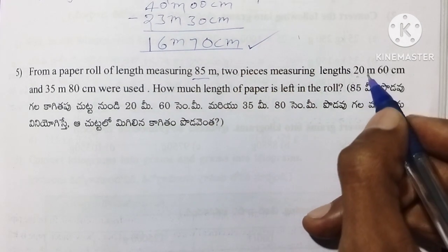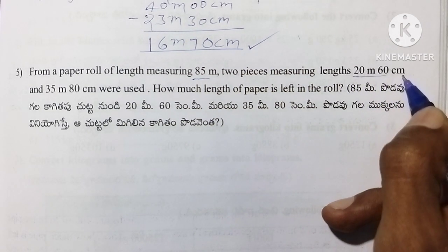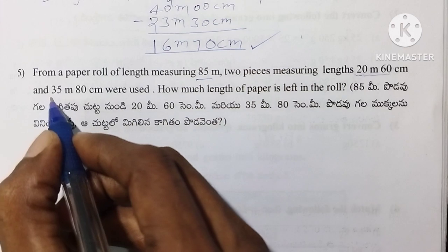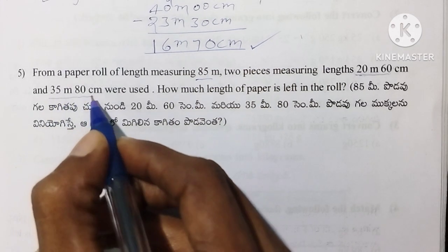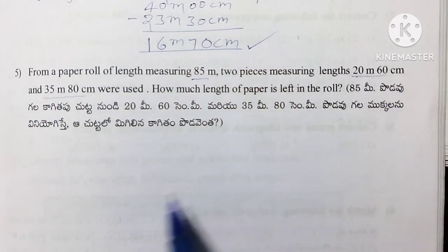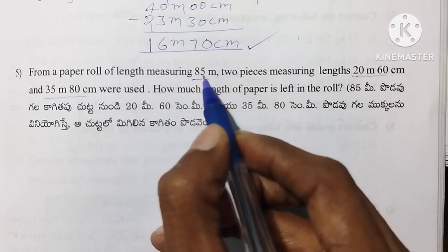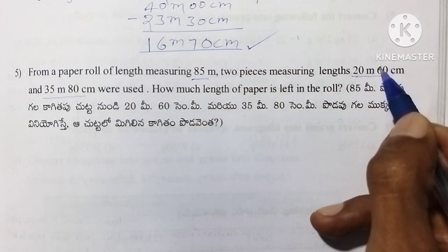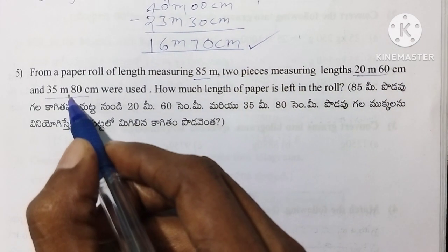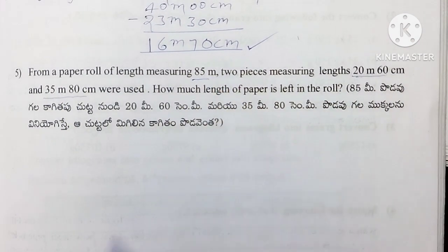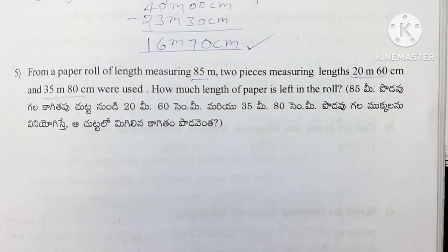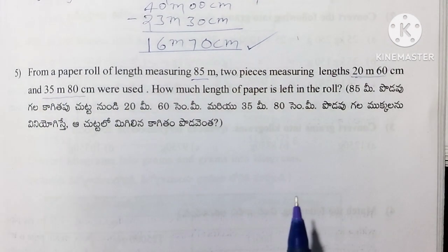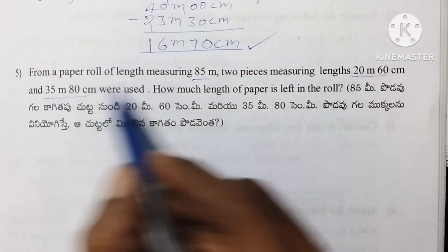Now, 20 meters 60 centimeters and 25 meters 80 centimeters. First, we add these together: 20 meters 60 centimeters plus 25 meters 80 centimeters gives 30 meters.